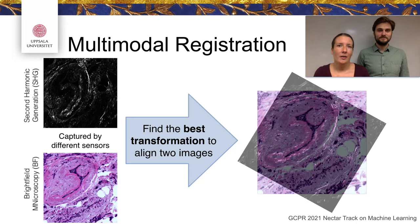Our motivation is based on multimodal image registration, which aims to find a suitable transformation to align two images captured by two different sensors, and hence can be of very different appearance. Here, for example, we have two images from the same tissue which are unaligned and imaged by two types of microscopes — one brightfield microscopy image and one second harmonic generation image.